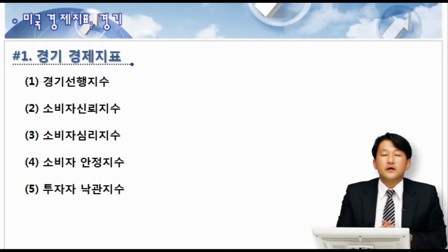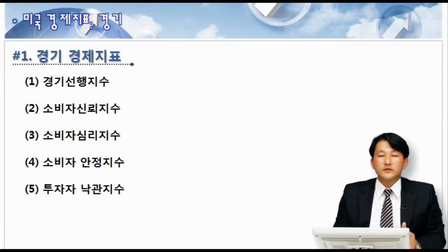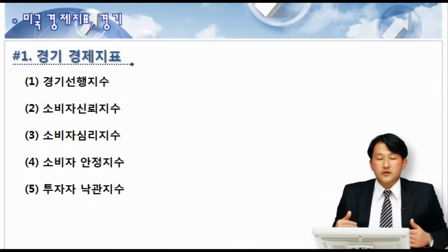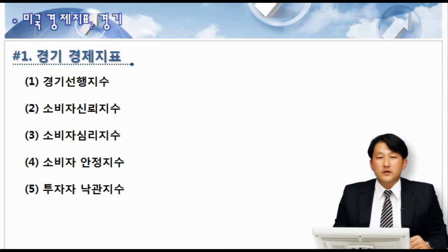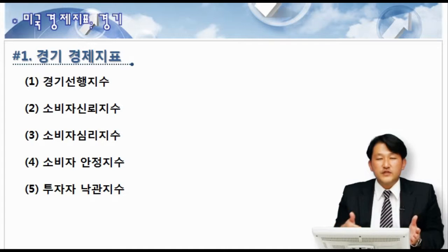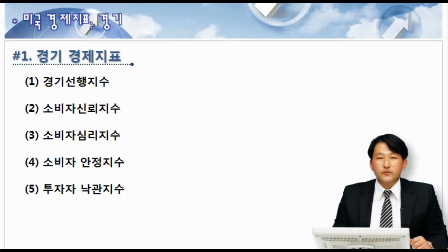기업인이라면 경기 전망을 잘 하셔야 돼요. 경기가 확장기로 올라갈 때는 재고 자산도 많이 만들고 설비 투자도 많이 하는 것이고요. 경기가 수축기로 간다면, 설비 투자 계획이 있더라도 중단을 해야 합니다. 왜냐하면 경기가 안 좋아지면 시장의 수요가 감소하고, 그만큼 기업이 판매하는 물건이 잘 안 팔리기 때문에 사후적으로 투자를 다 해놓고 후회하면 안 되는 거잖아요. 그래서 미리 예상해 볼 수 있는 지표가 바로 경기와 관련된 경제 지표입니다.